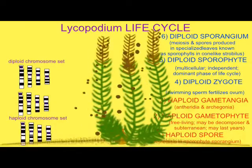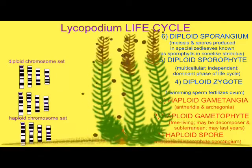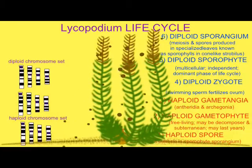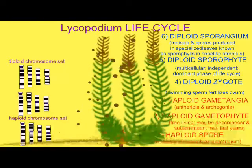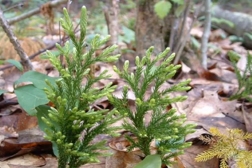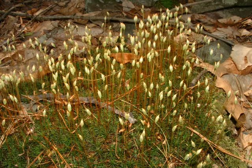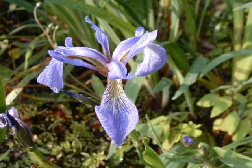These haploid spores can then start a new gametophyte generation. Primitive vascular plants are interesting in that their alternation of generations has about equal roles for the gametophyte and sporophyte generations, which is in contrast to the mosses and algae that preceded them — where the haploid generation was dominant — and the ferns and seed plants that came after, in which the sporophyte generation is dominant.